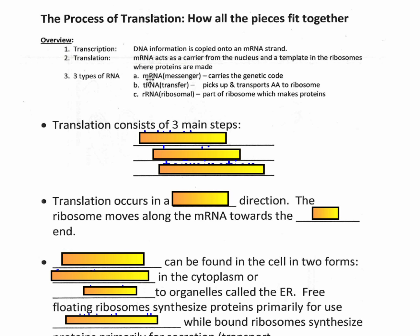Ribosomes are the protein factories — the places where proteins are made. For tRNA, the T helps me remember two things: one, it helps transfer an amino acid to the correct codon, and two, the structure of the tRNA actually kind of looks like a T. It's mainly named for transfer RNA. So the transfer RNA is going to pick up and transport amino acids to the ribosome.